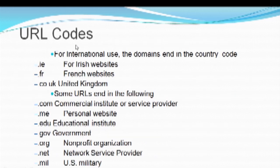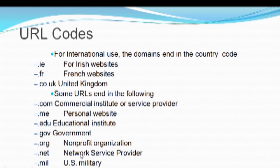Here are certain URL domain codes. For example, .com is used for commercial institutes or providers. .edu - if it is an educational website. .gov - if it is a government website it will end with dot gov. Then if it is a service provider it will use dot net. If it is for military purposes then it is dot mil. So these are different country codes as well as URL codes.